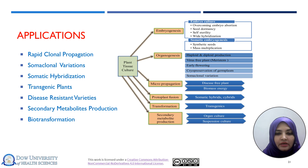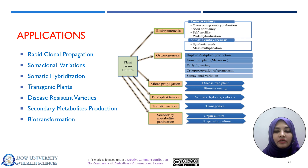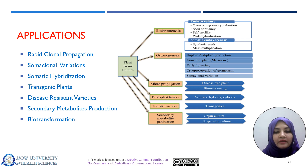Another important application of plant tissue culture is the production of disease-resistant varieties. In some cases, virus-resistant and other specific types of resistance can be added in plants, such as herbicide-resistant or weedicide-resistant varieties, which can be easily produced by this method.